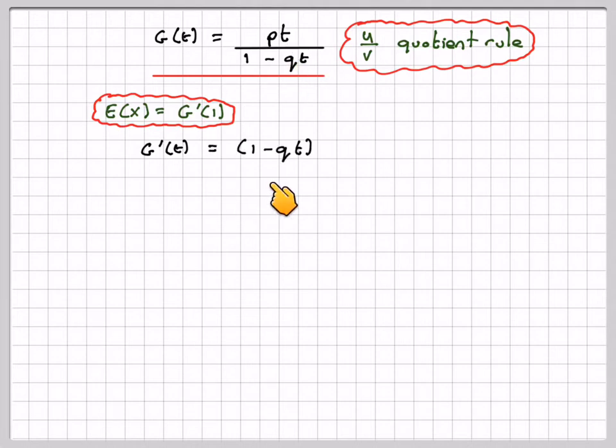So it's going to be (1-qt) times du/dt, which is p, minus u, which is pt, times the differential of the denominator, which is minus q, all over the denominator squared.